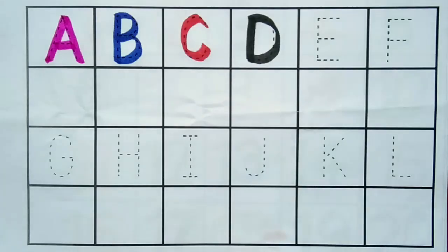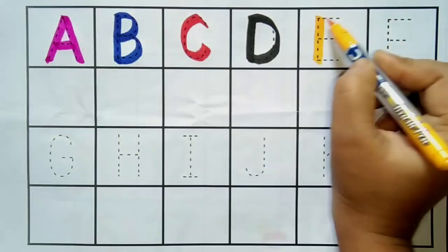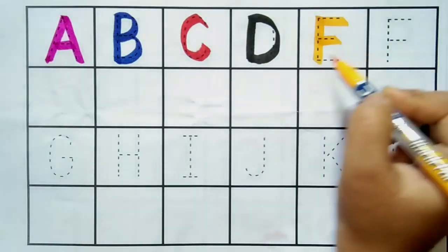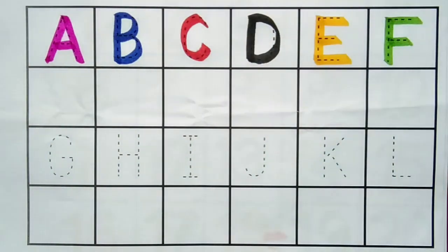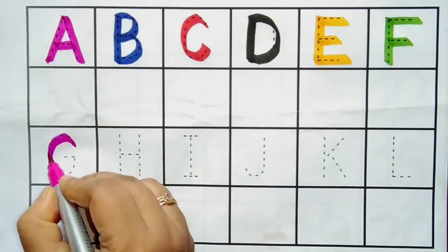D for doll. E, E for elephant. E for elephant. F, F for fruit. F for fruit. G, G for goat.